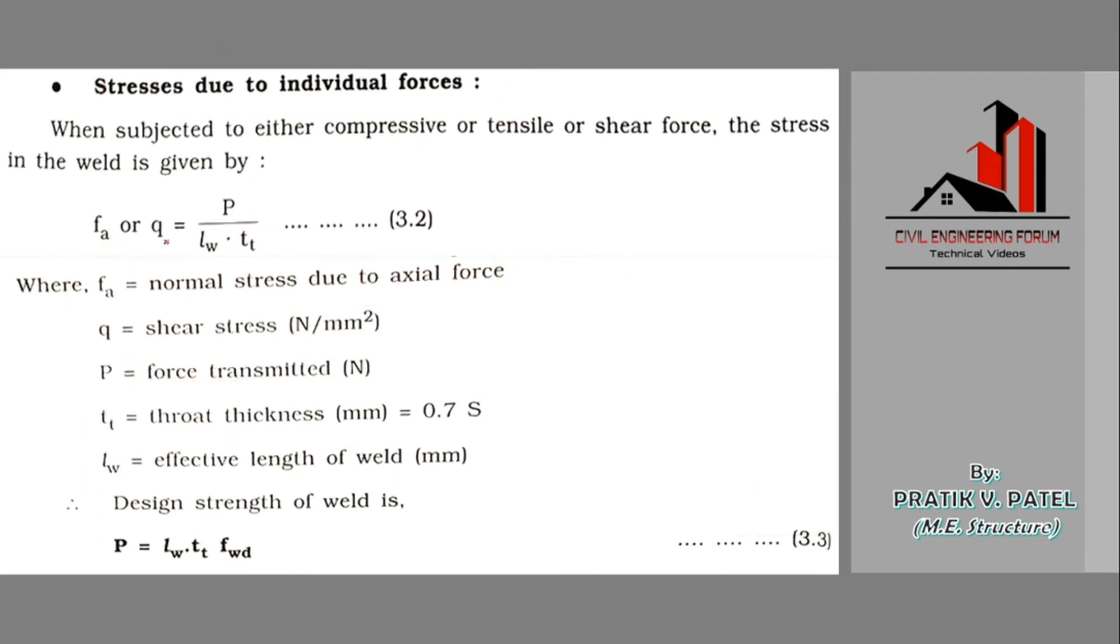So fa or q will be equal to external force divided by lw, that is effective length of the weld in mm, into throat thickness of the fillet weld, that is 0.7 into s, or if the weld sizes are different, then again we are having the formula for s in the form of a and b.